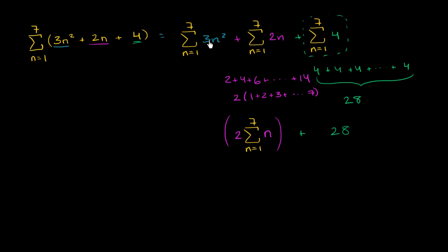And now we can do the same thing with this. 3 times n squared. We're taking from n equals 1 to 7 of 3n squared. Doing the same exact thing as we just did in magenta, this is going to be equal to 3 times the sum from n equals 1 to 7 of n squared. We're essentially factoring out the 3. We're factoring out the 2. And once again, we could put parentheses just to clarify things.